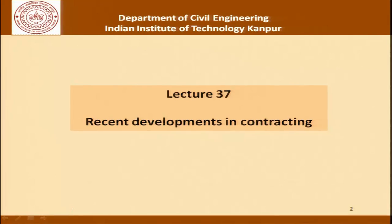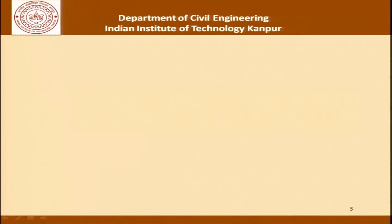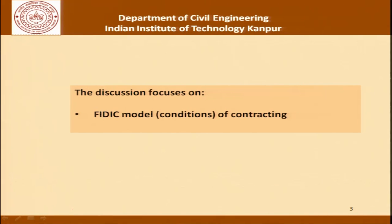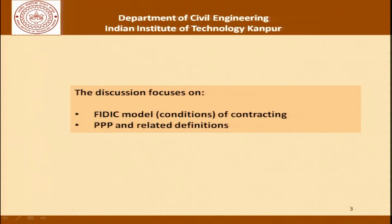Namaskar and welcome back to this series of lectures on principles of construction management. Today we will concentrate on some of the recent developments in contracting — specifically the FIDIC model or conditions of contracting and the PPP and related definitions. Both these issues are important from the point of view of modern construction. As far as the FIDIC model is concerned, we will contrast it to the MES or the military engineering service, which is one of the commonly used central government general conditions of contract in India. You can also look at CPWD and other specifications and realize that FIDIC is a more rational form of contracting.